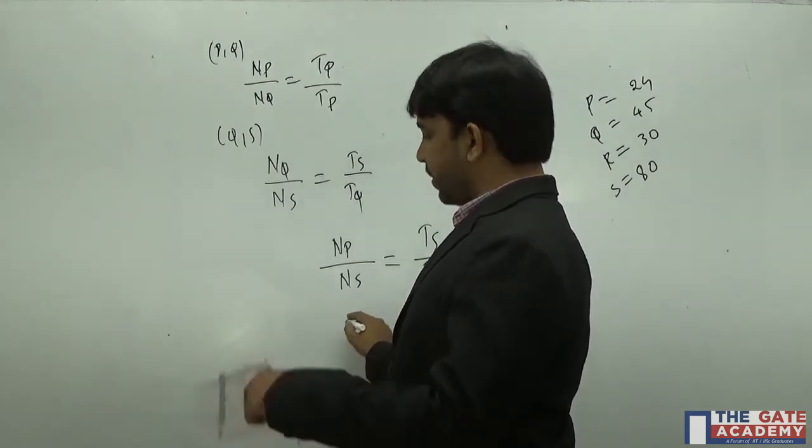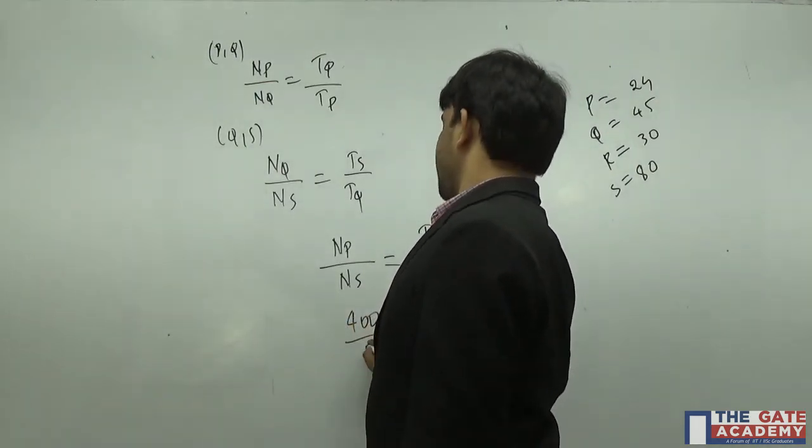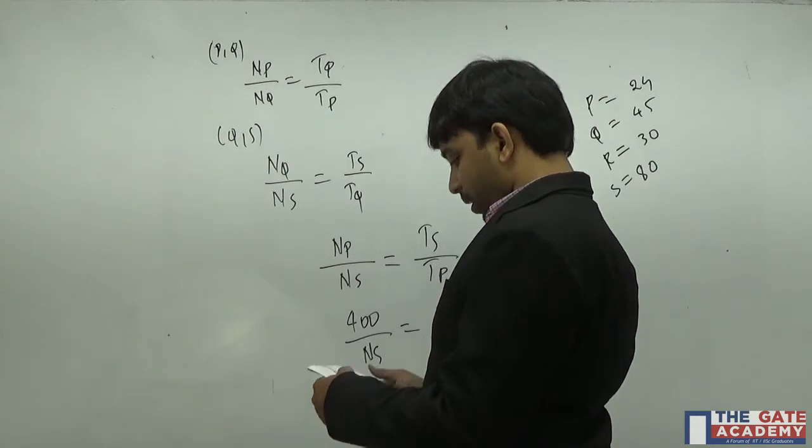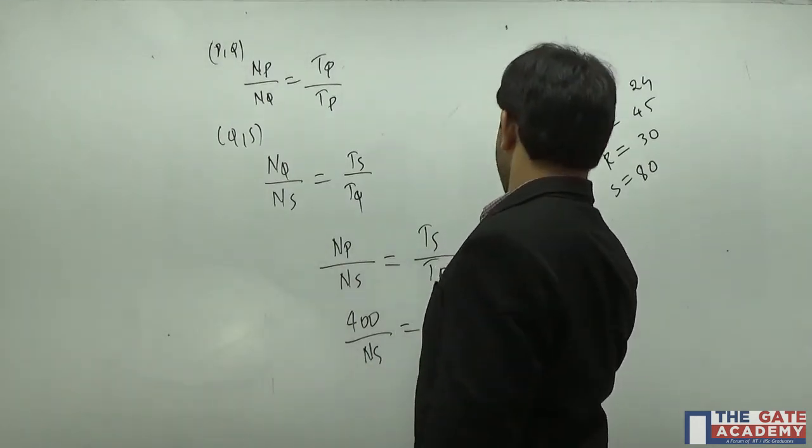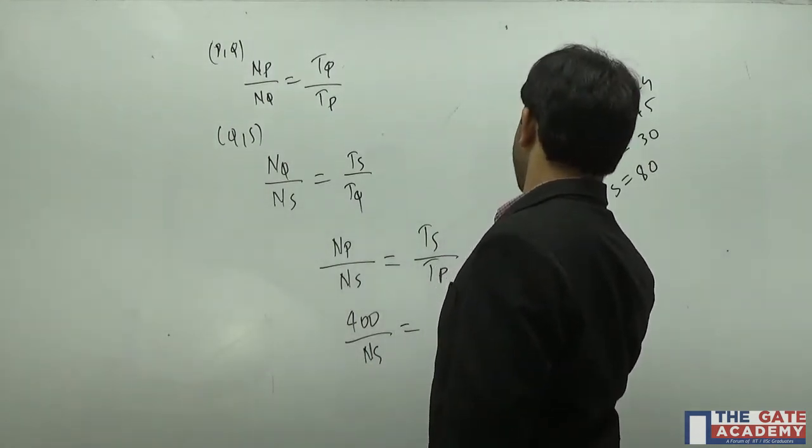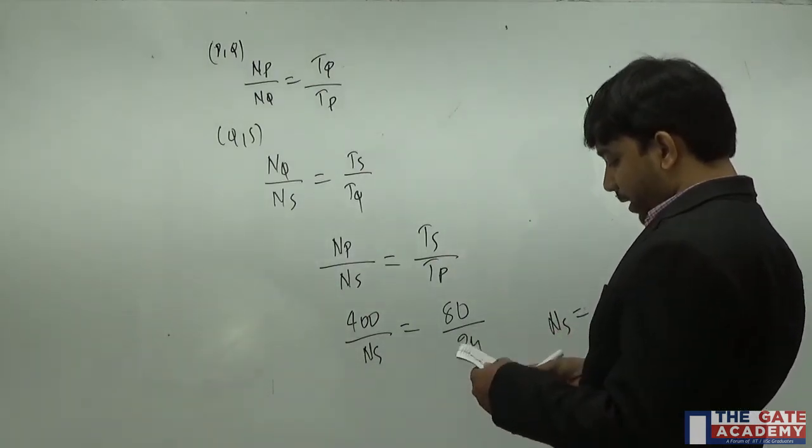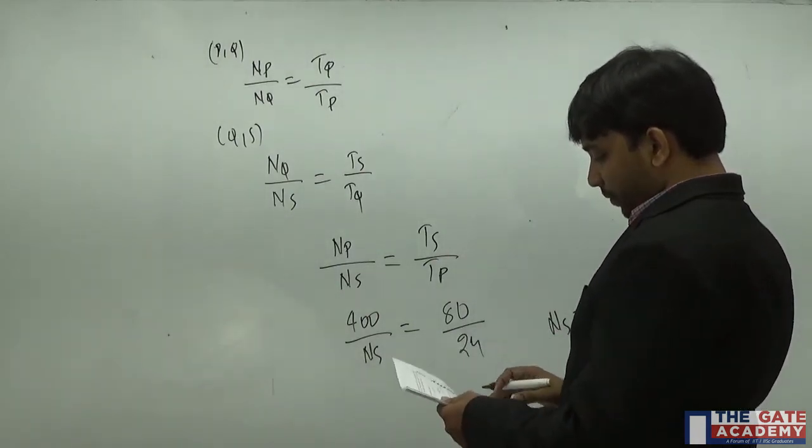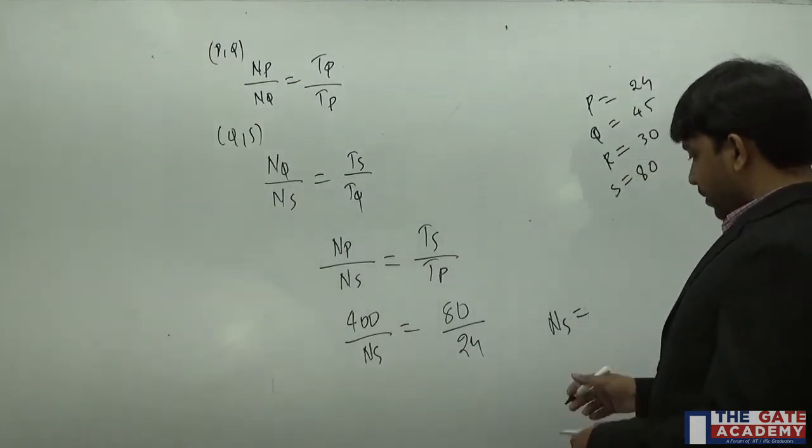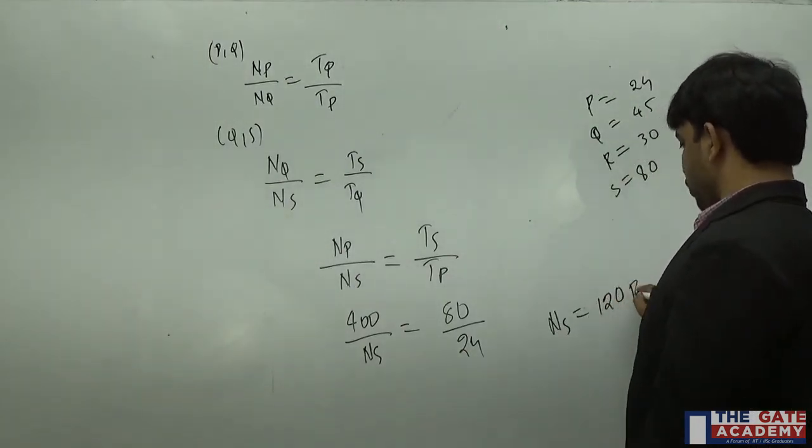Speed of P is given as 400 RPM. He is asking us to develop the speed of S. Number of teeth on S is 80, number of teeth on P is 24. If you simplify this, you will get speed of gear S as 120 RPM.